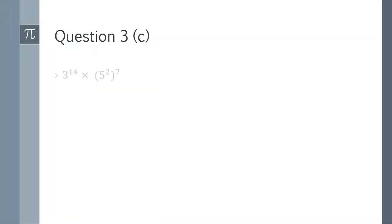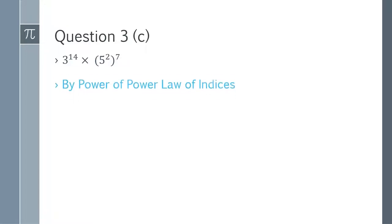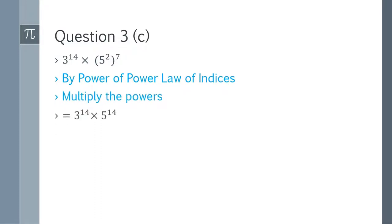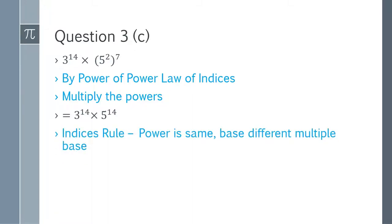Question 3c: 3^14 multiplied by (5^2)^7. First apply the power of power law to remove the parenthesis: (5^2)^7 = 5^(2×7) = 5^14. Now we have 3^14 × 5^14 — different bases, same power. We multiply the bases and keep the power: (3×5)^14 = 15^14. That is the answer.